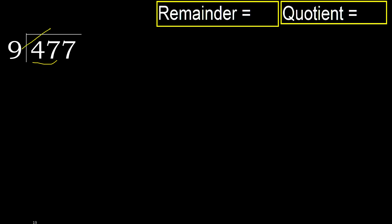9 multiplied by which number is nearest to 47 but not greater? 9 multiplied by 6 is greater. Multiplied by 5: 45 is not greater. Subtract: 47 minus 45 equals 2.